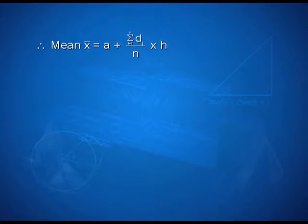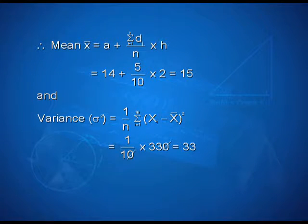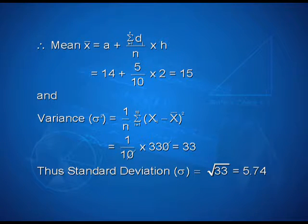Therefore, using the formula, mean x bar is equal to a plus summation i from 1 to n of di upon n into h. We have 14 plus 5 upon 10 into 2 is equal to 15. Variance sigma squared is equal to 1 upon n into summation i from 1 to 10 of xi minus x bar whole square, calculated as 1 upon 10 into 330, which gives us 33. Thus the standard deviation sigma is equal to the positive square root of 33, which is equal to 5.74.